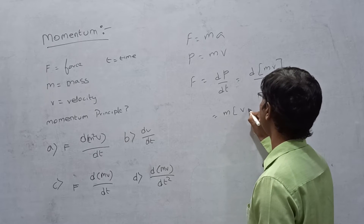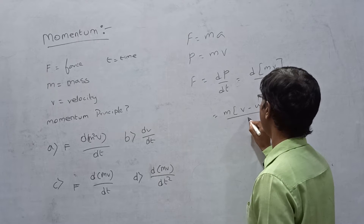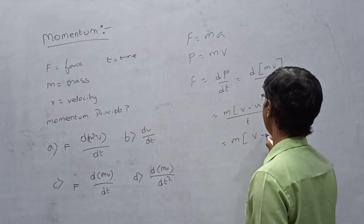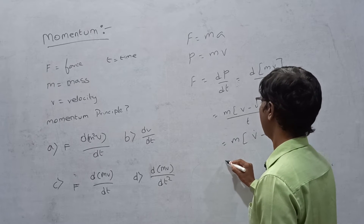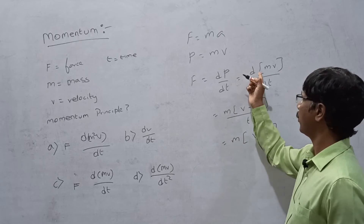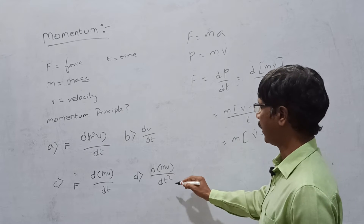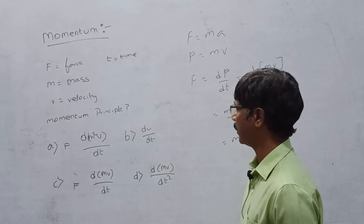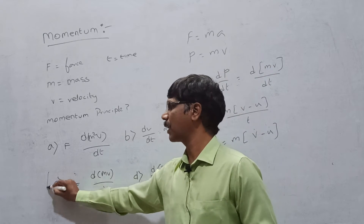M is the same. This is v minus u. This is t. m into v-dot minus u-dot. This is the change in momentum. This option is the change in momentum. This is t squared. This is m squared. This is v. This change in momentum — then, if we compute g,